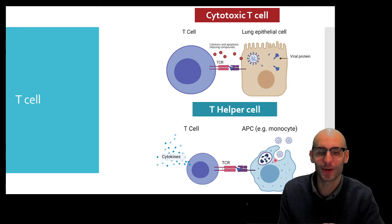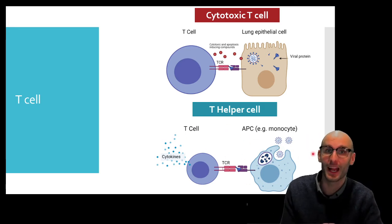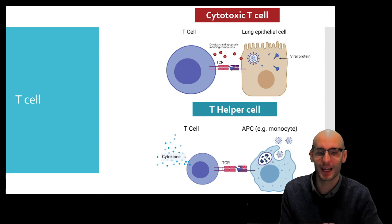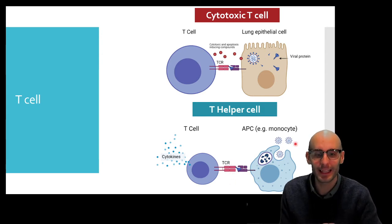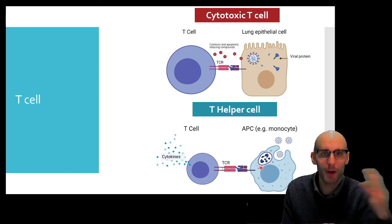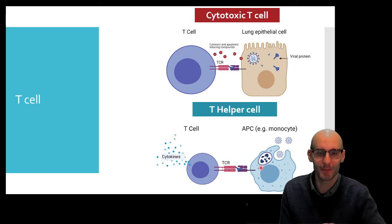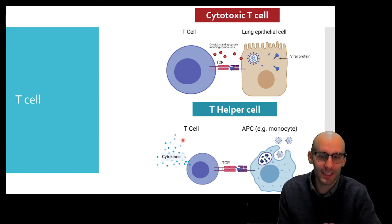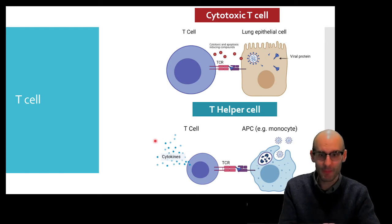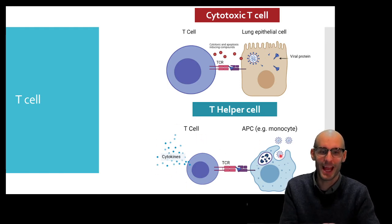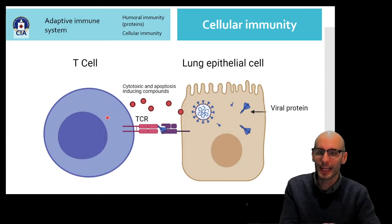A T helper cell coordinates with a professional antigen presenting cell, and if it recognizes it, rather than killing the macrophage or monocyte — why would it do that, that's an immune cell — rather than killing it, what it does is it releases cytokines, and so it coordinates the immune response with the help of the antigen presenting cell. So let's jump on that a little bit closer.